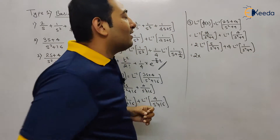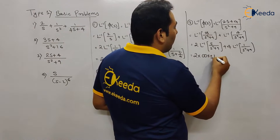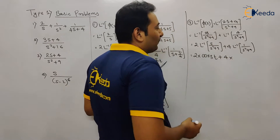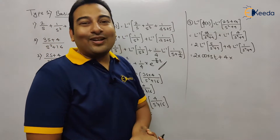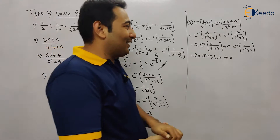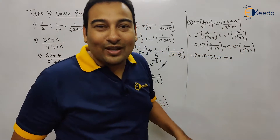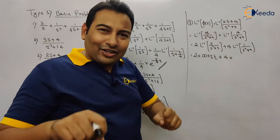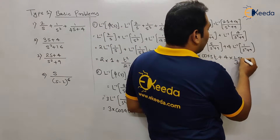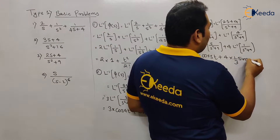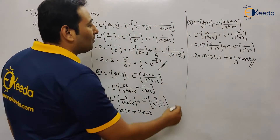So the Laplace inverse of s/(s²+9) is cos 3t, plus 4 times the Laplace inverse of 1/(s²+9). The formula is 1/(s²+a²) = (1/a) sin(at), so that is (1/3) sin 3t. Therefore the answer is 2 cos 3t + (4/3) sin 3t. Done with problem number three.